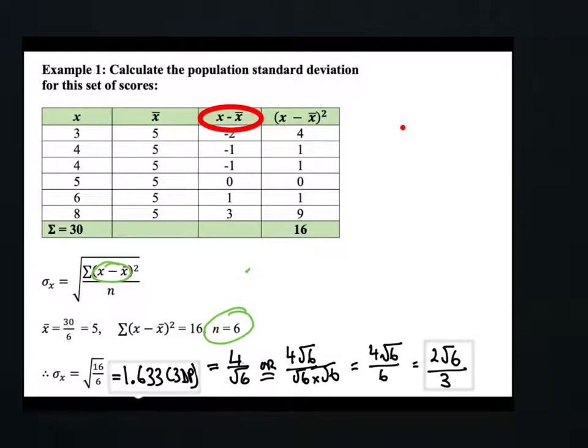Where I'm up to so far in my formula is completing a column for that bit there. Now the formula is telling me what I need to do next is square each score in the previous column. You can see that negative two squared is four, negative one squared is one, etc.